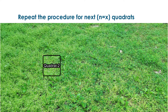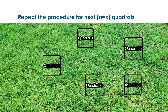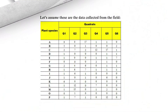Then continue this same procedure for Quadrat 2, Quadrat 3, 4, 5, 6, till whatever the required number of quadrats. For this demonstration, let us assume that we have carried out 6 quadrat samplings in the habitat of interest. These are the final data recorded in your field notebook and compiled in a final data sheet.